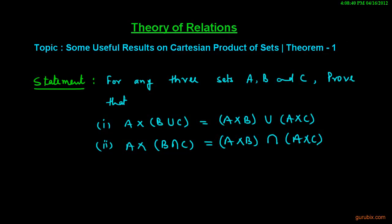Welcome friends. Now we shall learn some important results on Cartesian product of sets, and this is the first theorem. The statement of this theorem is as follows: for any three sets A, B and C, prove that A cross (B union C) is equal to (A cross B) union (A cross C), and in the second part, A cross (B intersection C) is equal to (A cross B) intersection (A cross C). We have to prove these two results. So let us see how to do it.